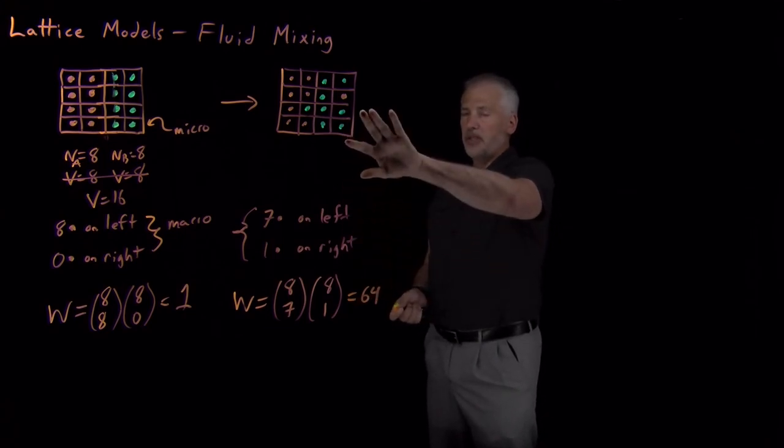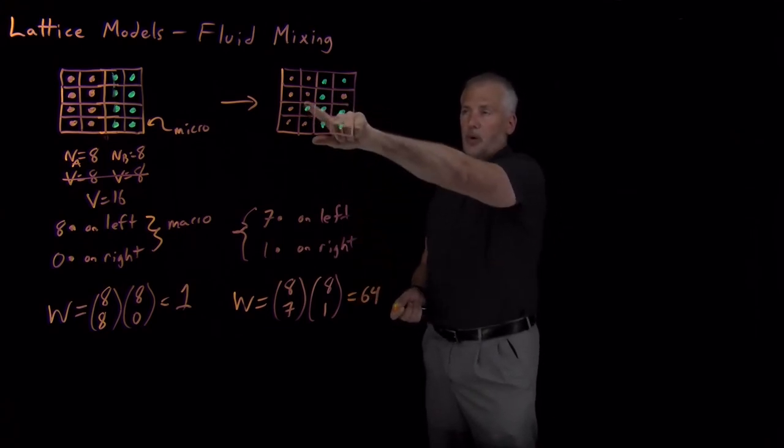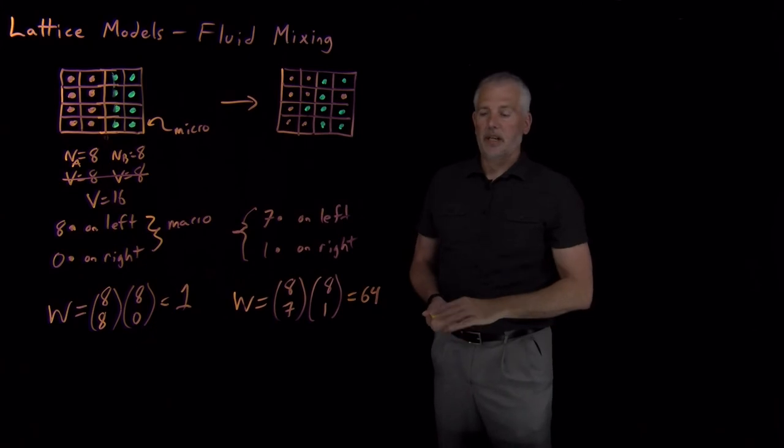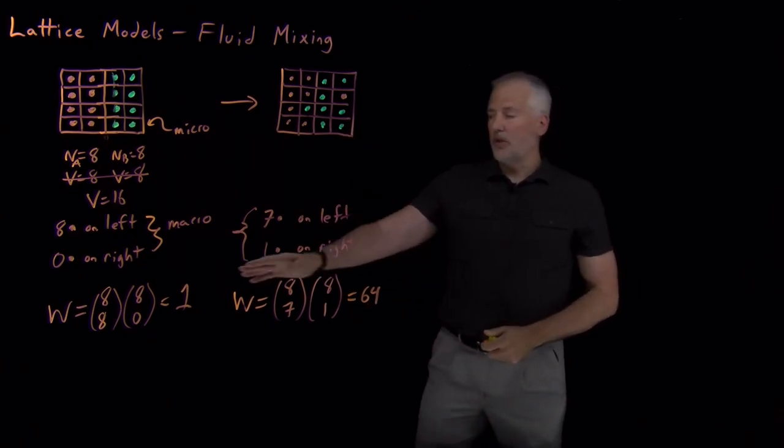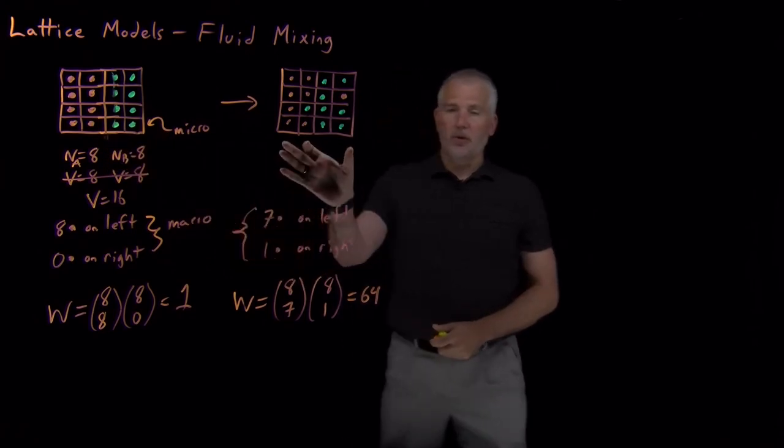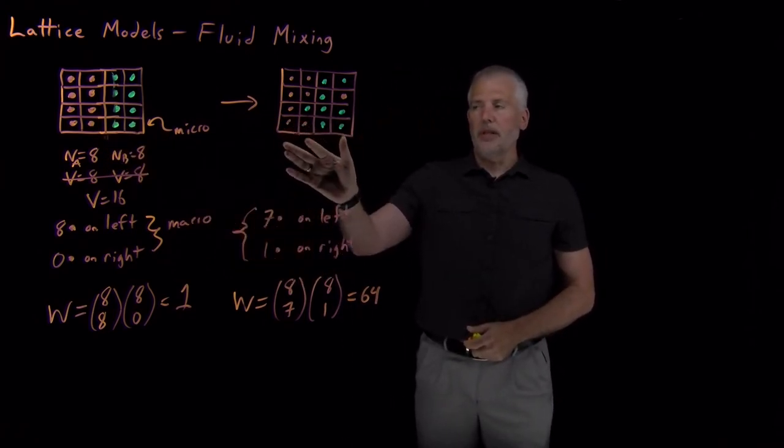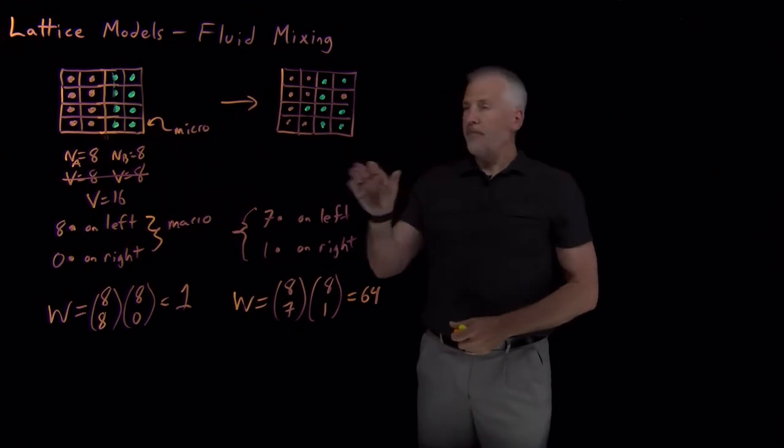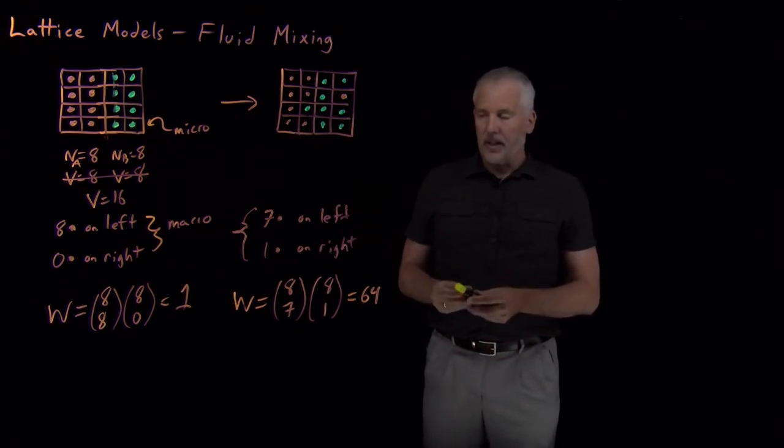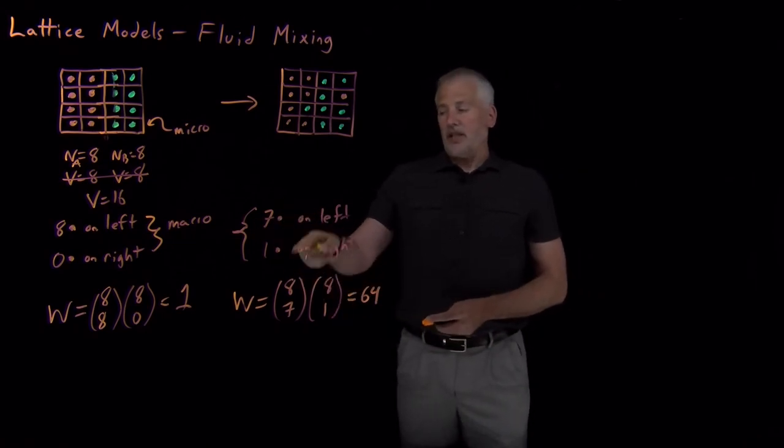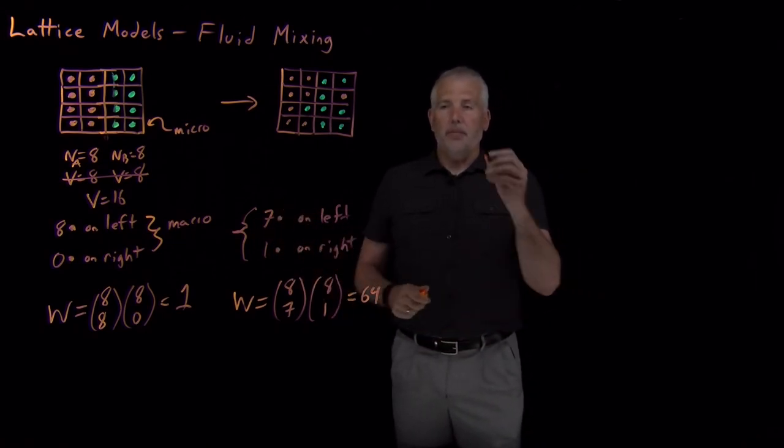So it turns out that the multiplicity for this partially mixed system where one molecule is crossed over to the other side is 64 times more likely. There's 64 ways to draw this. There's only one way to draw this, so it's 64 times more likely that the fluids mix at least a little bit. But of course, that's not the most probable thing that will happen.